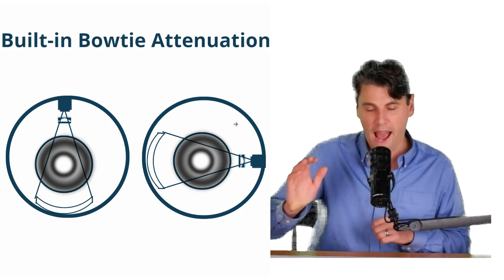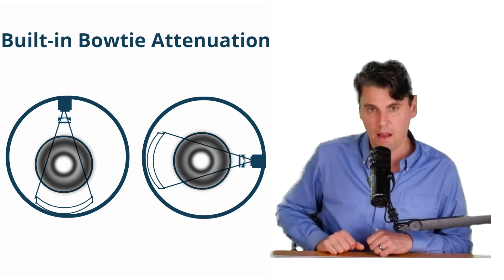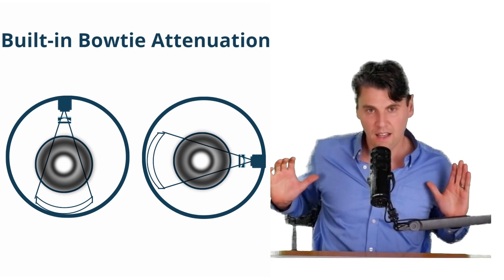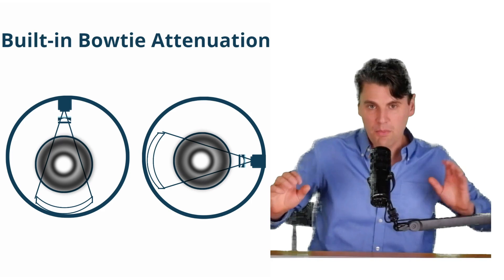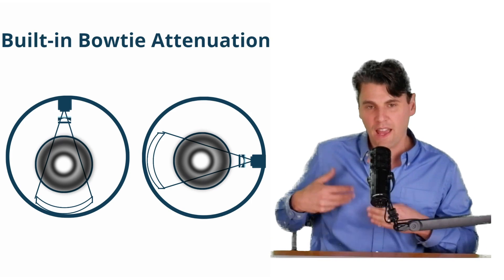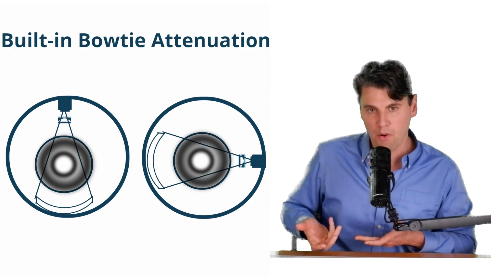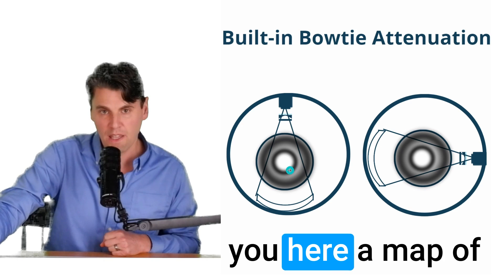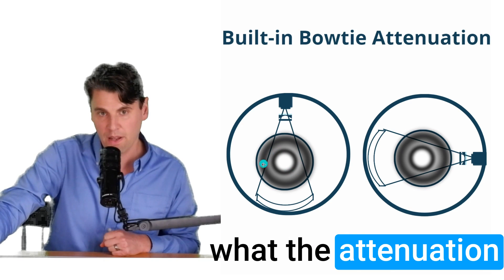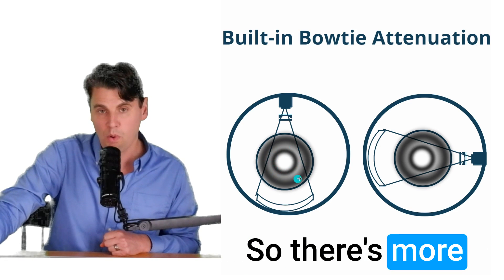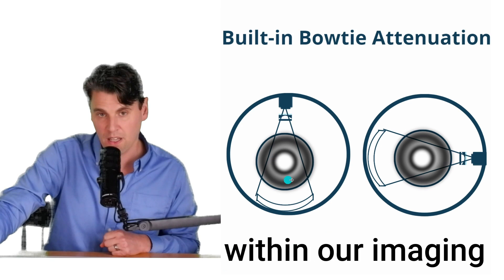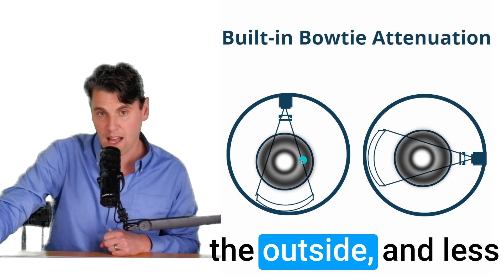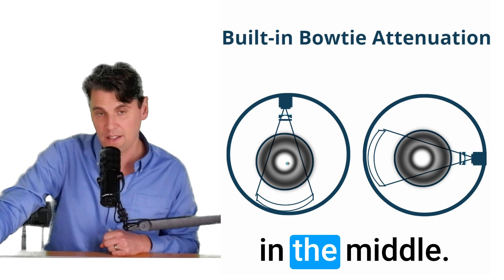And if you remember the back projection process that we talked about in our image reconstruction, where we took the data and we put it back through the volume, think about doing that for the actual attenuation of the bowtie. So we're basically showing you here a map of what the attenuation of the bowtie is like.